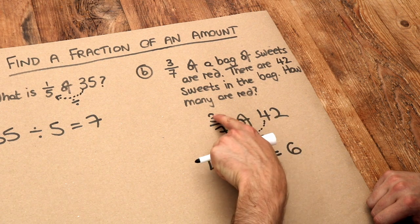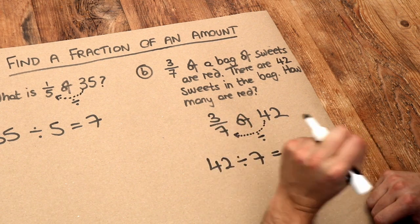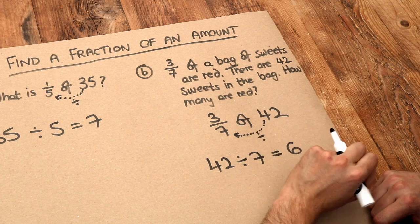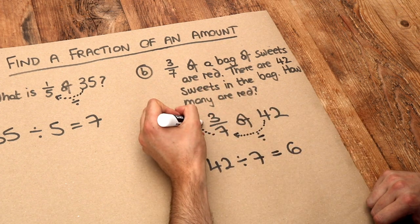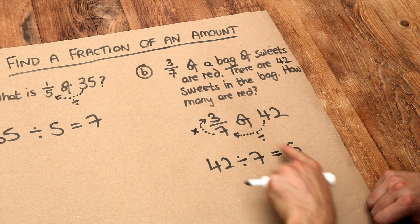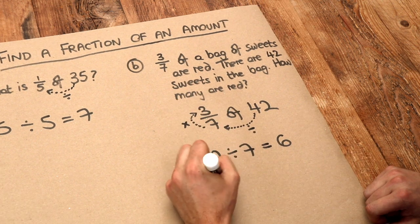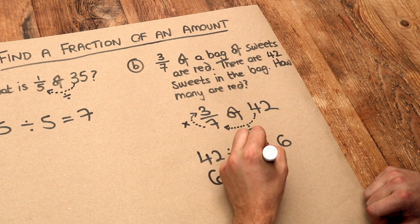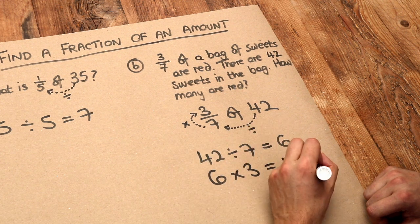But we want 3 sevenths. Now 3 sevenths is going to be 3 times bigger than a seventh. So we need to multiply by the number at the top. This 6 we've got, we're going to multiply it by this 3. So 6 times 3 is 18. And that is the final answer.